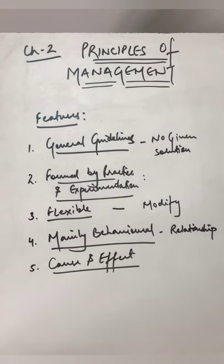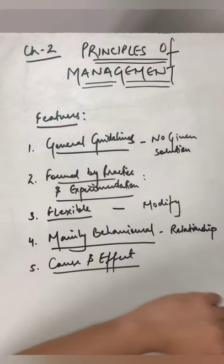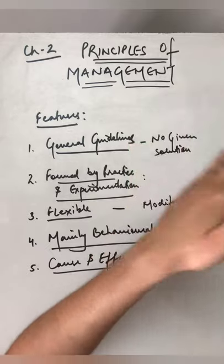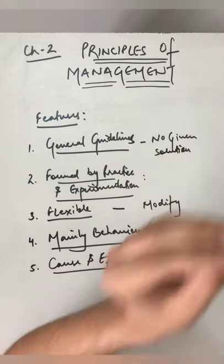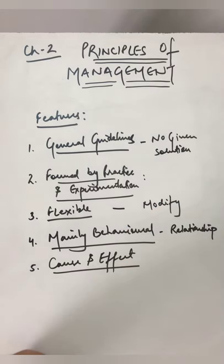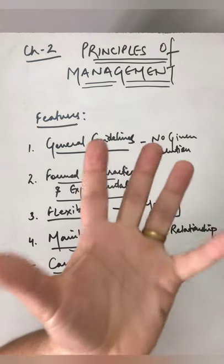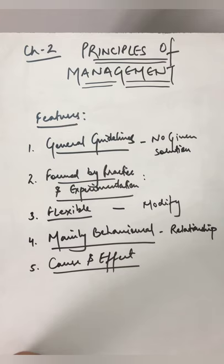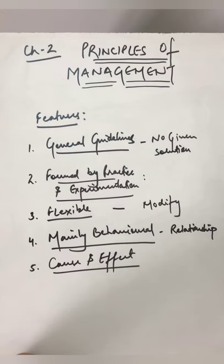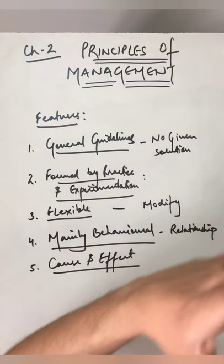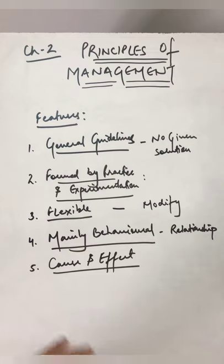The next feature of principles of management is a cause and effect relationship. When you apply a principle, a cause applies and after applying that principle, we expect a common effect. For example, the principle of division of work: if employees are overburdened, you divide the work, and the effect is improved performance on the divided tasks.